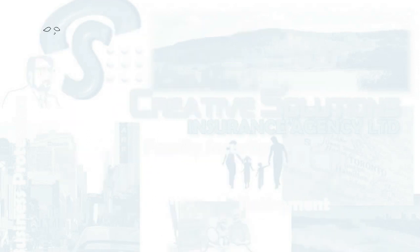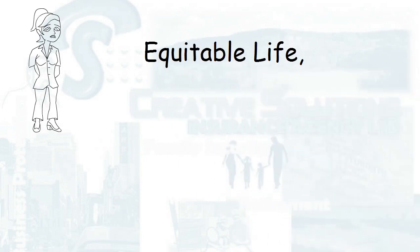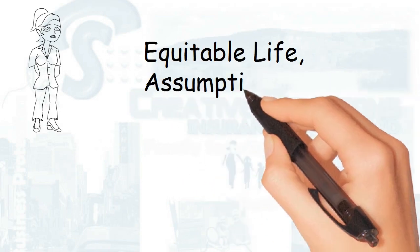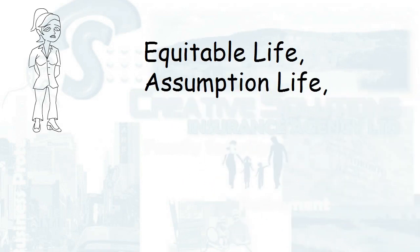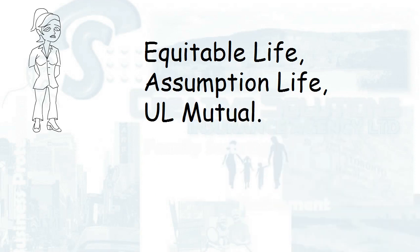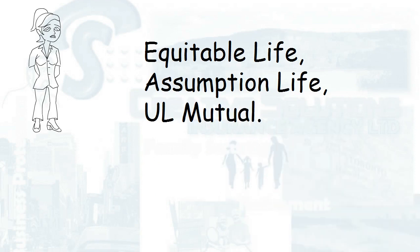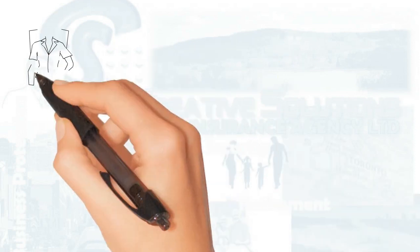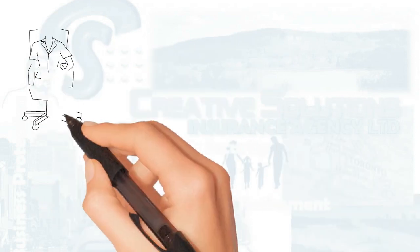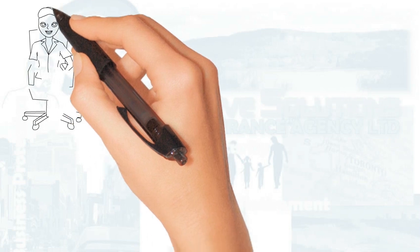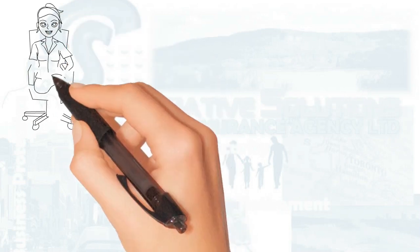Examples of mutual life companies that remain are Equitable Life, Assumption Life, and UL Mutual. The third corporate structure type is fraternal societies.